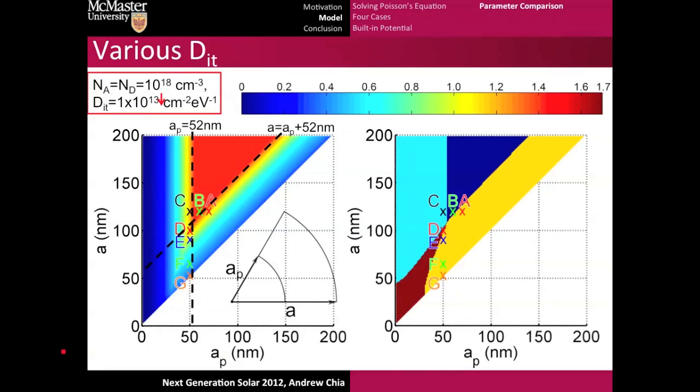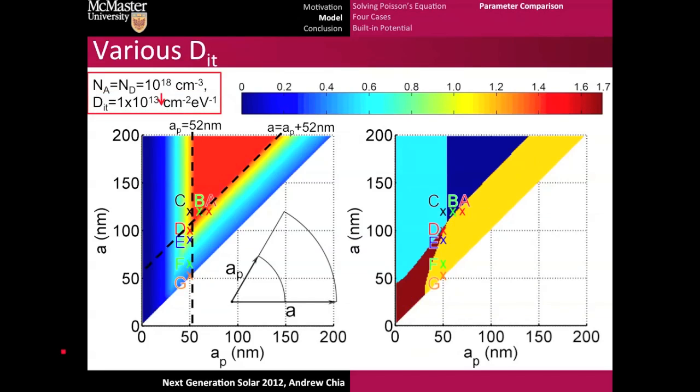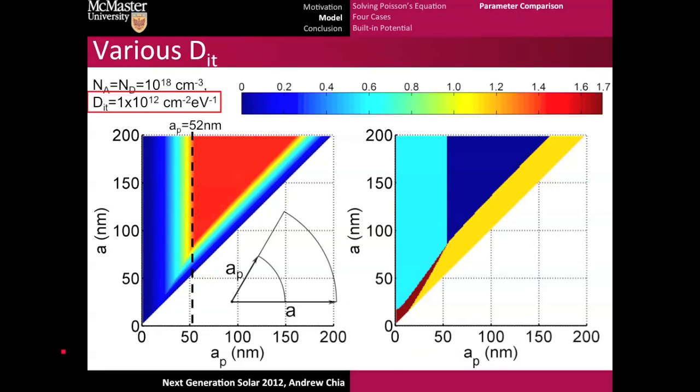What if we reduce the density of interface states, which would be analogous to passivating the surface of the nanowire? When we do that, we revert to a system that looks like this. We'll go from this to this. Clearly, the red triangle is increasing. Our new line is this. The number changed from 52 nanometers to 40 nanometers, so now our minimum shell thickness is 40 nanometers. If we do that one more time with an even lower DIT, we get a lower threshold for the shell thickness at 30 nanometers. As you lower the density of interface states, you can afford to have thinner and thinner shells. It's key to note here that here there isn't really much of a case four.